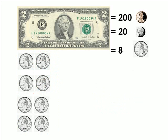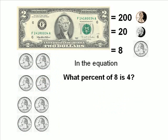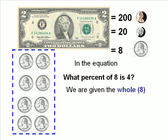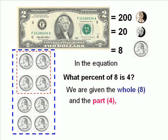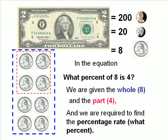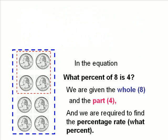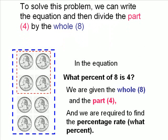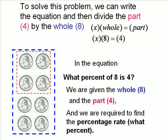Now let's look at this in terms of equations. In the equation: what percent of eight is four? We are given the whole as eight, the part as four, and we need to find the percentage rate. Using the equation x times the whole equals the part, substituting eight for the whole and four for the part, we solve for x and get four divided by eight, which is fifty percent.